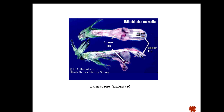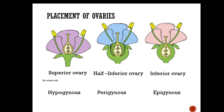Here we have the Lamiaceae — these are bilaterally symmetrical; you could not slice them in every direction and get the same identical reflection. The other way that flowers are described is as hypogynous, perigynous, or epigynous.